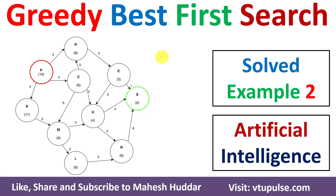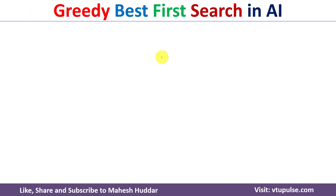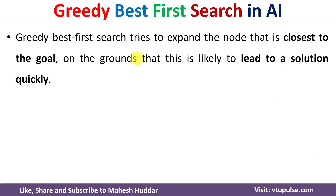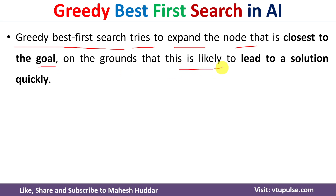Welcome back. In this video I will discuss the greedy best first search algorithm in artificial intelligence with the help of a simple solved example. This is solved example number two; a link for other examples is given in the description below. The greedy best first search algorithm tries to expand the node that is closer to the goal node, on the grounds that this will likely lead to the solution quickly.